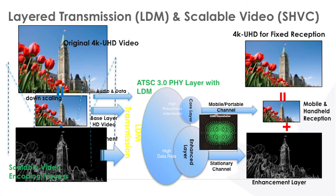Another technology we use is called video pod — it's scalable video. We have a 4K UHD TV. Using video processing technology, we transmit two streams: one full-quality and one smaller one for mobile. On the receiving end, they come together. If you want mobile, you only decode one. If you want high resolution, you add the two together and get high resolution.